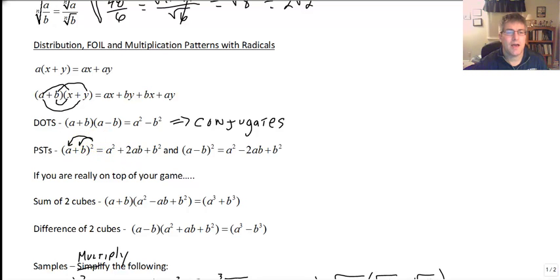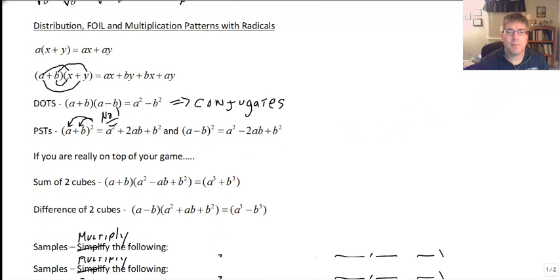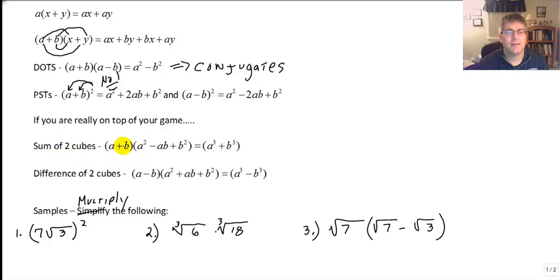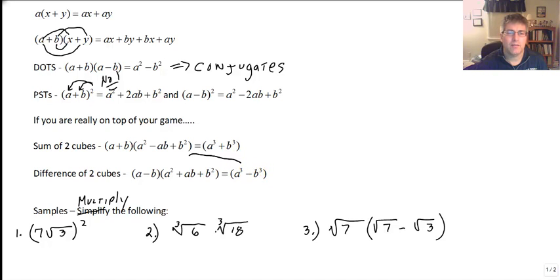Remember that squaring a binomial radical incorrectly is an absolute no-no. If you're really on top of your game, you'll also recognize the sum of two cubes: A plus B times A squared minus AB plus B squared multiplies out to A cubed plus B cubed. Same for the difference of two cubes: A minus B times A squared plus AB plus B squared multiplies out to A cubed minus B cubed. We memorize these in the opposite direction with factoring, but factoring is just multiplication in reverse.